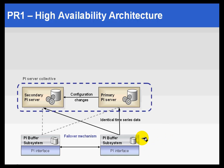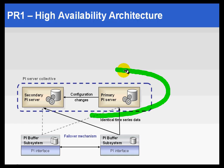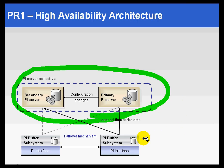If you're using the traditional BuffServe, you would need to configure which are the replicated servers that are supposed to get the data. That's different from the buffering subsystem, because with the PI Buffer Subsystem we're calling this group of servers a PI Collective. The buffering subsystem will actually interrogate the collective to figure out which servers are supposed to receive this data, and it doesn't have to be configured manually as you would do with the traditional buffering service.